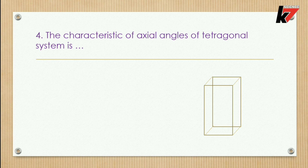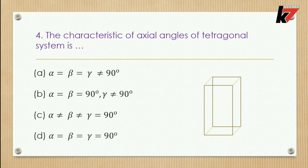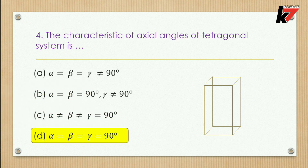Question 4: The characteristics of the axial angle of the tetragonal system — options: α=β=γ≠90°, α=β=90° and γ≠90°, α≠β≠γ=90°, or α=β and γ=90°. The correct option is the last one: α=β and γ=90°. Remember, tetragonal and cubic have the same axial angles.